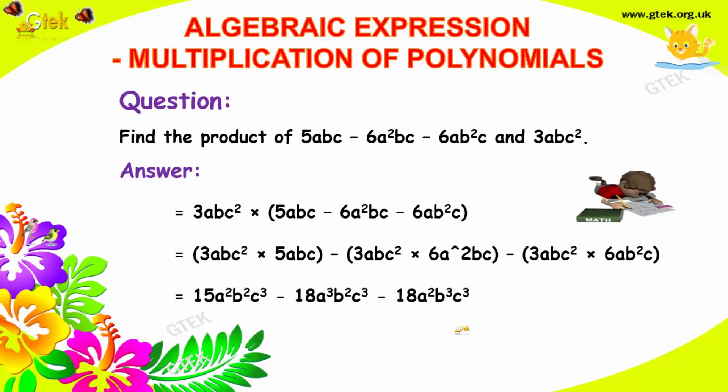We'll move on to the next problem, it's 5abc - 6a²bc - 6ab²c and 3abc². As I told, you have to get 3abc² into 5abc. Now, and afterwards, you need to multiply single term, as this one. 1 and 2 here, 1 and 2 here, 1 and 2 here.